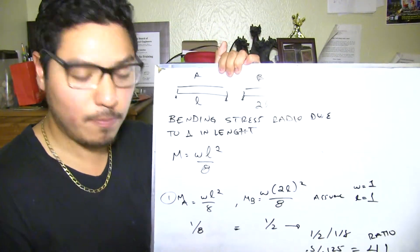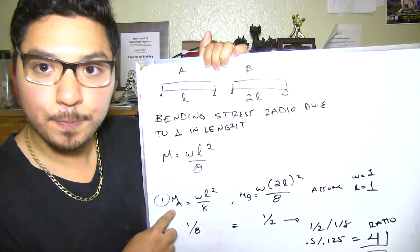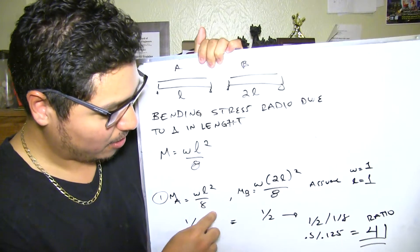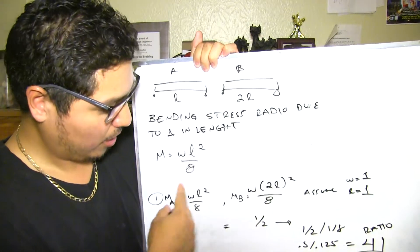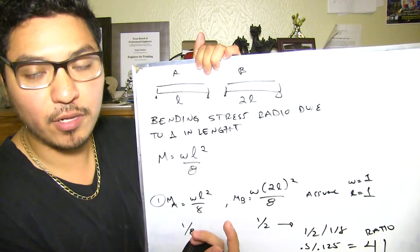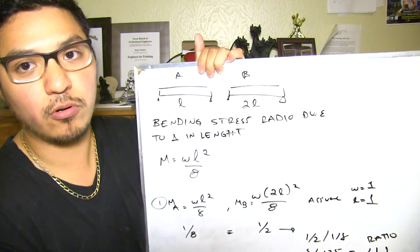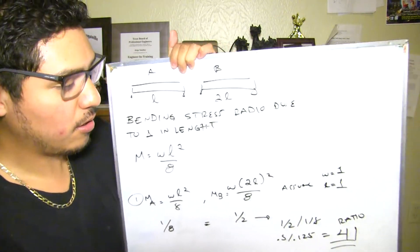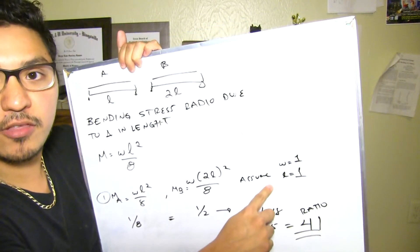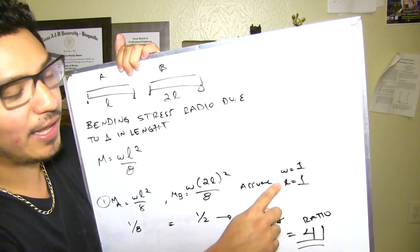So here I have the problem solved. Moment A equals WL squared over 8. Moment B equals W times 2L squared over 8. These are just maximum moment formulas. You can find them in any structural book or you should know this. Then here's what I did: I assumed W equals 1 and L equals 1.